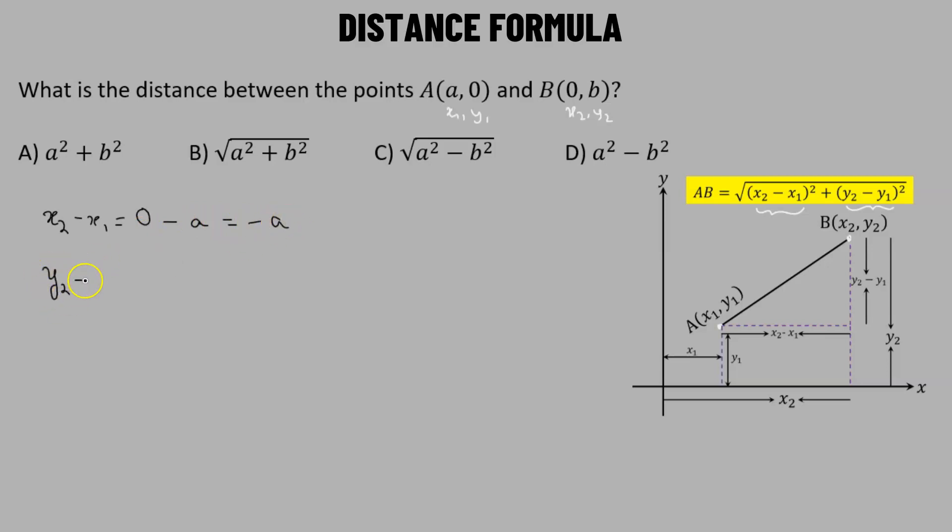And then we find out y2 minus y1, that's the difference of the y coordinates. So y2 corresponds to the value b, so we have b minus y1. y1 corresponds to the value 0, so b minus 0 will be simply b.